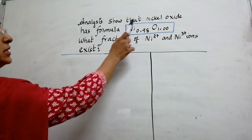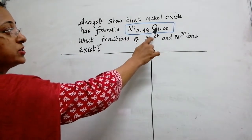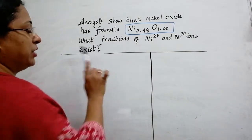Analysis showed that nickel oxide has formula Ni0.98O1.00. What fraction of nickel 2+ and nickel 3+ ions exist?